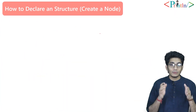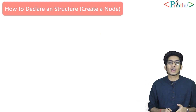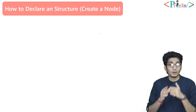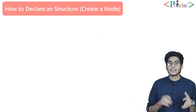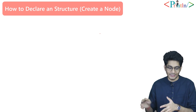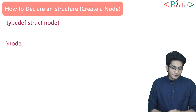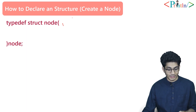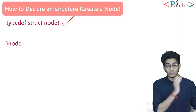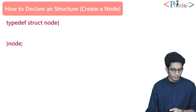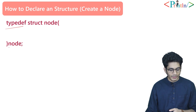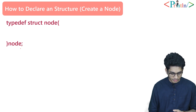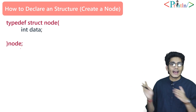Now we'll talk about the coding — how you can create a node and what technical parameters you need to follow to create a linked list using C. First, we have to create a structure. We have written typedef so we give the structure a nickname. The nickname of the structure is 'node'. We have two parts: one is data and another is the address (next pointer).